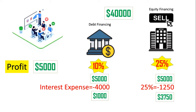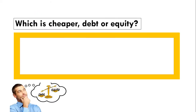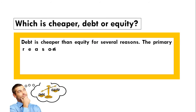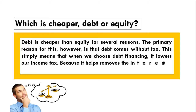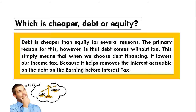So which is cheaper — debt or equity? Debt is generally cheaper than equity for several reasons. The primary reason is that debt comes with a tax advantage: choosing debt financing lowers our income tax because interest expense is deducted from earnings before interest and tax. However, looking back at our example, we saw that equity financing can sometimes be cheaper than debt financing. So it depends — but in general, debt financing is cheaper than equity financing.